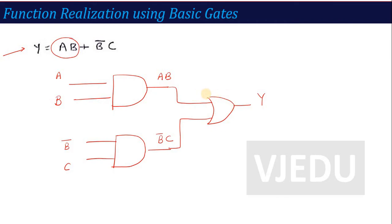There is another thing to add: we used B̄ here. How does B̄ come? We studied the third basic gate — the inverter. So we apply B through an inverter (NOT gate) and connect it to the AND gate. B̄ is generated. Now the circuit is complete. This is how you analyze a function using basic gates.